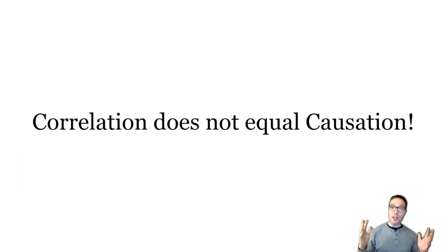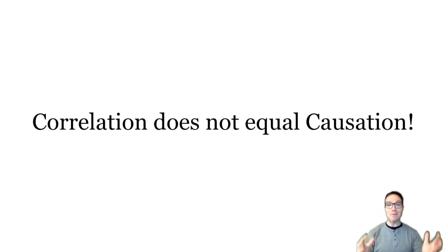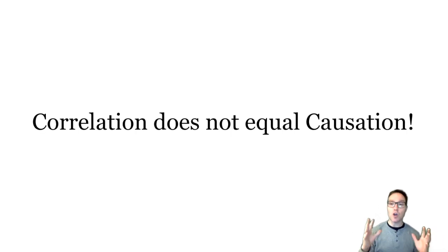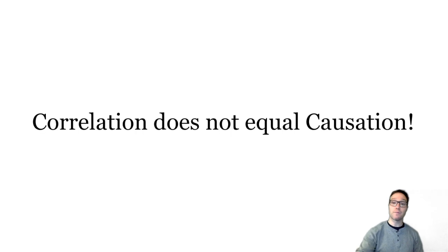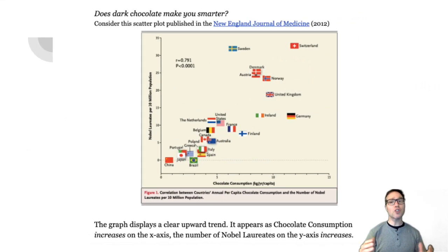We cannot draw a conclusion beyond the existence of a correlation or association. Here's a common saying in the world of statistics: correlation does not equal causation. The idea is that there may be a real relationship between the two variables, but that does not mean that one causes the other. So what should we think when we look at a graph like this? Here are some questions that come to my mind.